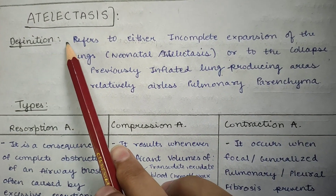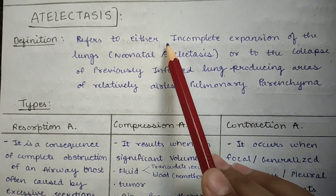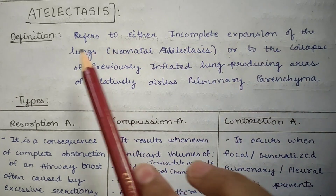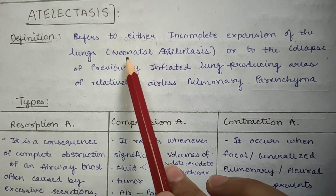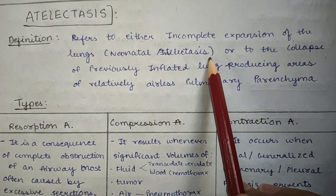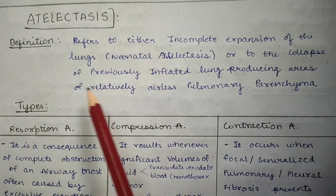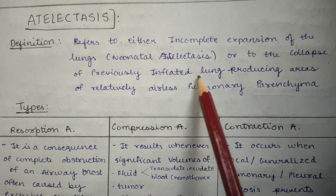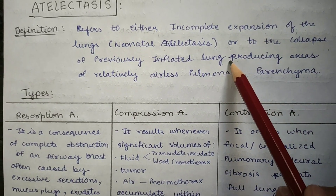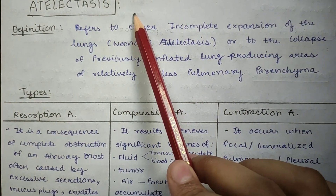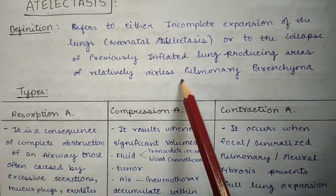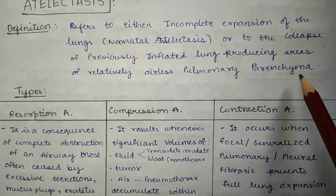We will start with the definition. You have to remember two sentences: incomplete expansion of the lungs, which mainly happens in neonates, hence it is called neonatal atelectasis. And the collapse of the previously inflated lung — collapse or incomplete expansion occurs — that's why it is called atelectasis. That produces areas of relatively airless pulmonary parenchyma.